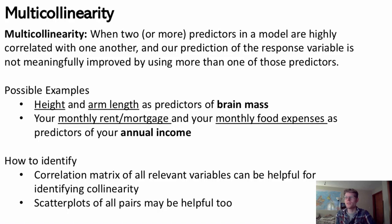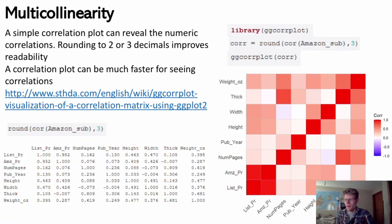Scatter plots of all pairs can also be helpful, though I'm not a big fan of that because if you have more than five or six predictors it's kind of hard to see them all. But if you have really high multicollinearity, it would probably stick out.